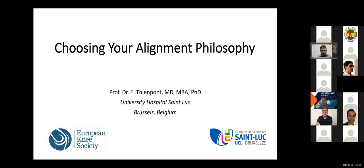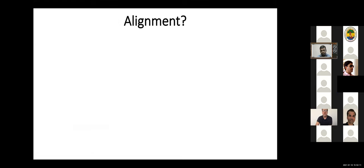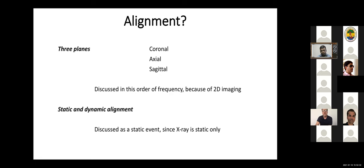It was an interesting discussion about robotics. Now, this will go a little bit in the same way, because we're talking about your alignment philosophy. When you talk about alignment, one of our classic mistakes is that we preferentially discuss the first two, coronal and axial, because we have 2D imaging, and we use much less x-rays or CT scan to look at the sagittal plane. Also, we love to talk about dynamic alignment, but we don't know how to measure it, so what we do is we use it as a static event, since the x-ray is static only.